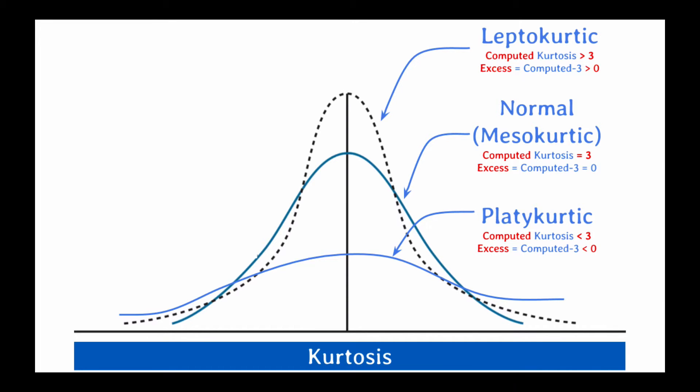A platykurtic distribution has excess kurtosis less than 0 and a computed kurtosis of less than 3. Leptokurtic distributions will have a greater percentage of small deviations from the mean and a greater percentage of extremely large deviations from the mean.